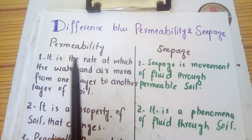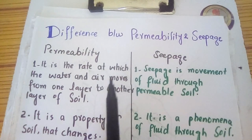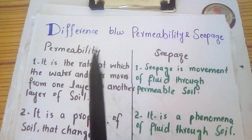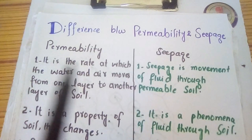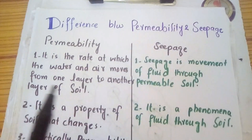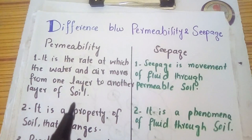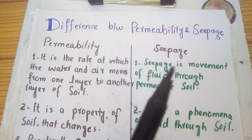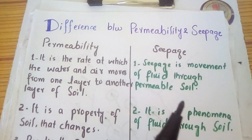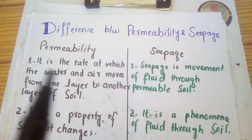Permeability is the rate at which water and air move from one layer to another layer of a soil. Seepage, on the other hand, is the movement of flow through a permeable soil.